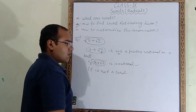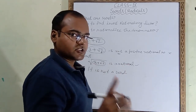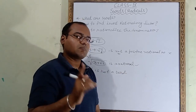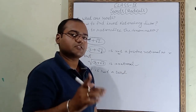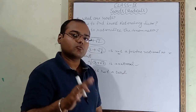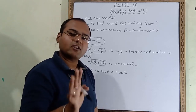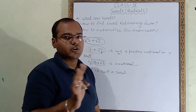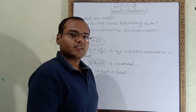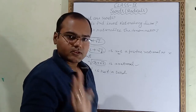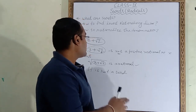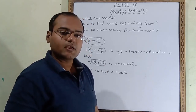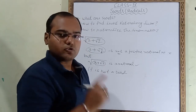For a surd, both conditions must be satisfied: the number must be a positive rational number, and its square root, cube root, etc. must be irrational. If these two conditions are true, then we call it a surd. Like this, you have to do all the remaining parts of question number 1. Now we will come to the next topic.